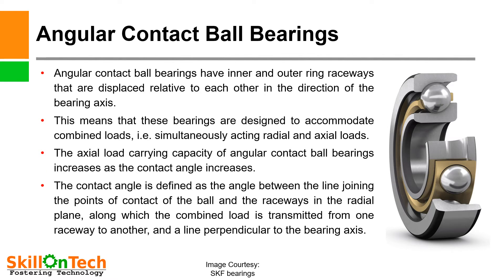The next type is the angular contact ball bearing. A picture of an angular contact ball bearing is shown, where you can see that one side of the race is raised differently from the other. Angular misalignment in a pump, prime mover, or compressor can be easily accommodated by these bearings. Angular contact ball bearings have inner and outer raceways displaced relative to each other in the direction of the bearing axis, designed to accommodate combined — simultaneously acting radial and axial — loads.